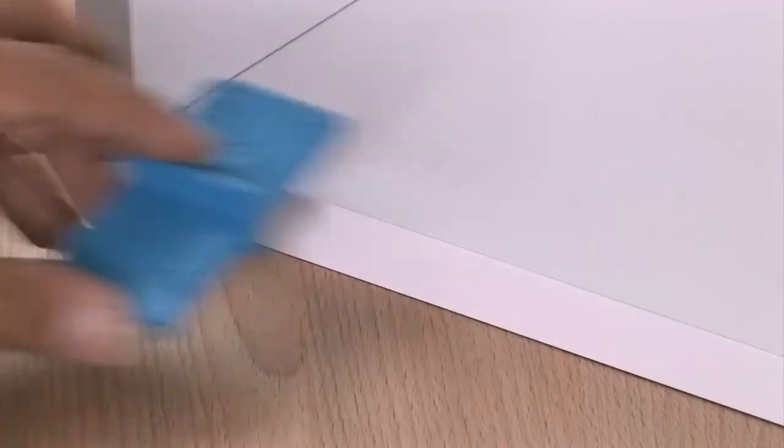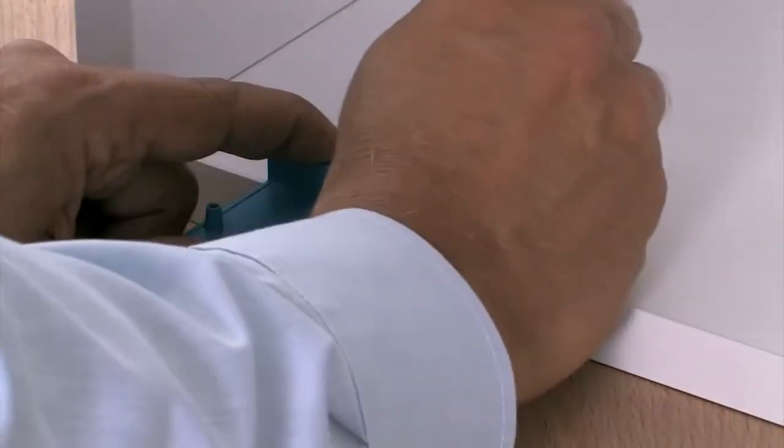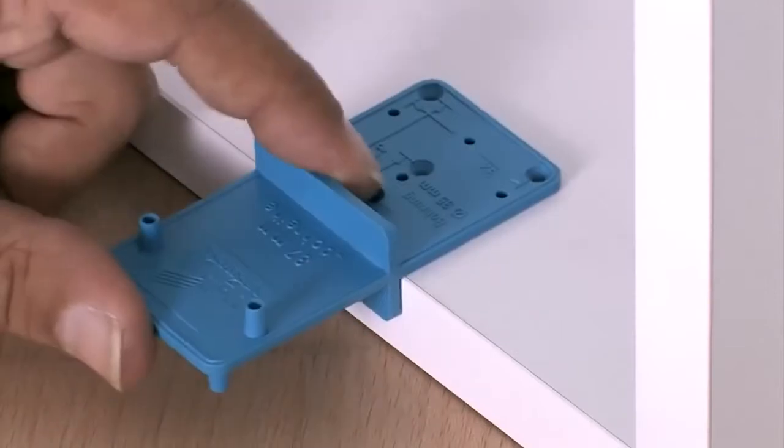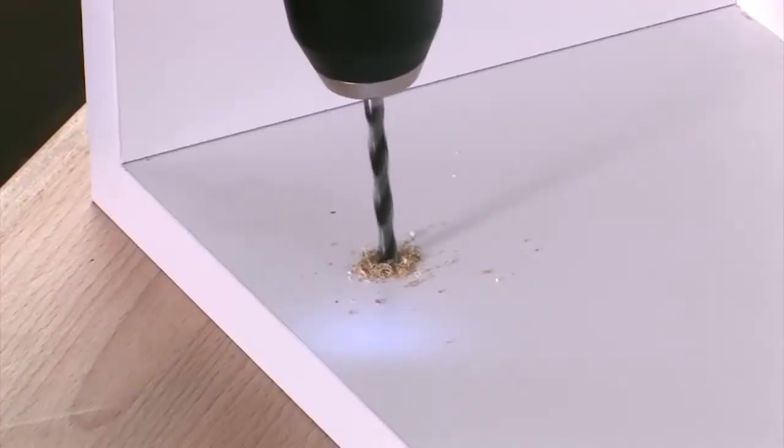When fitting hinges to furniture that doesn't already have drill holes, it is recommended to use our small blue drilling template. Begin by marking the positions for drilling the holes in the carcass for the mounting plate.